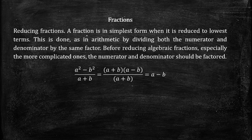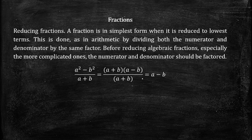Reducing a fraction to lowest terms is done, as in arithmetic, by dividing both the numerator and denominator by the same factor. Before reducing algebraic fractions, especially the more complicated ones, the numerator and denominator should be factored. We need to factor both parts in order to find the common factor between the numerator and denominator.